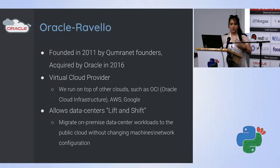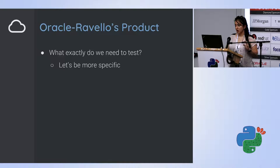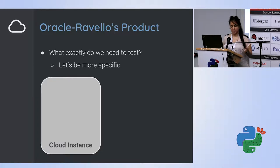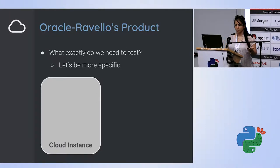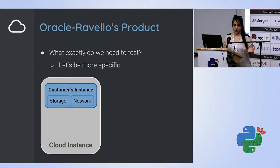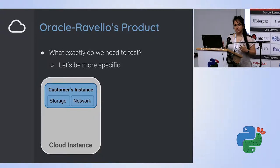In order to understand what the testing environment looks like, let's focus on the part we're going to test. Let's assume we have one cloud instance — it could run on Amazon, Google, or whatever. We would want to run any of your guests, any of your machines, on top of it. So we have our customer's instance, and this instance would need to have storage or network configuration. Let's just call it a guest from now on.